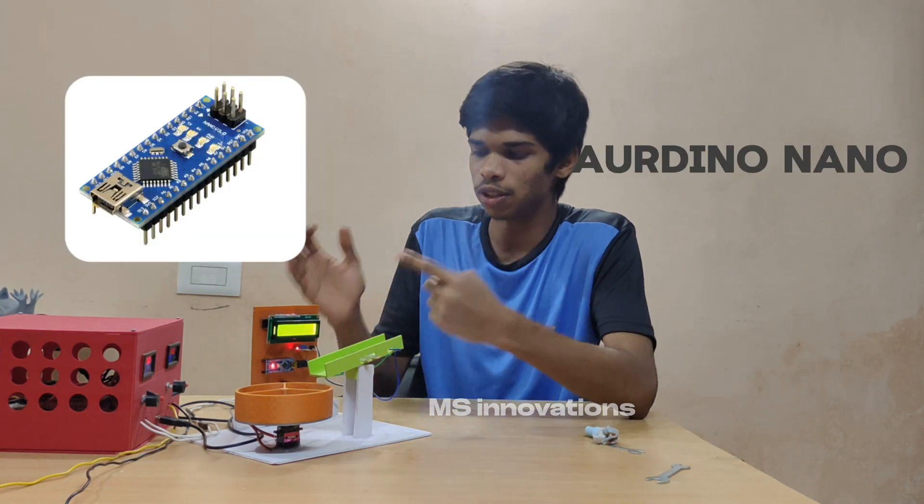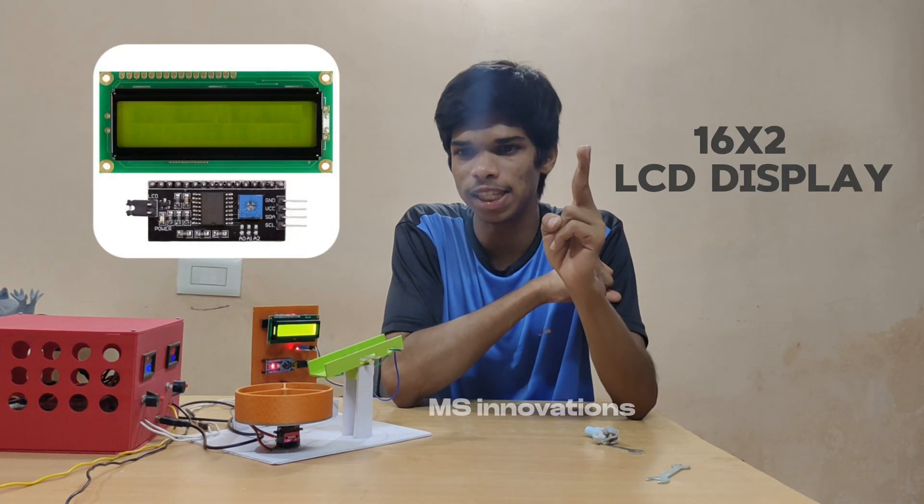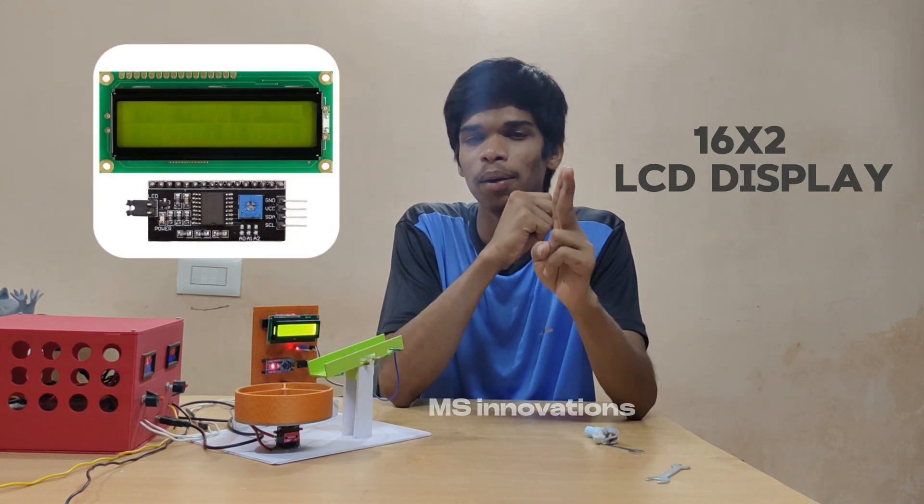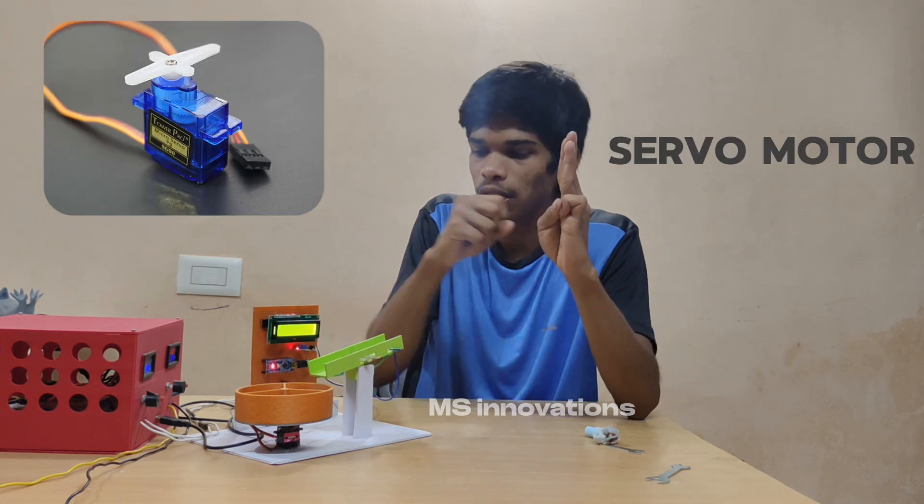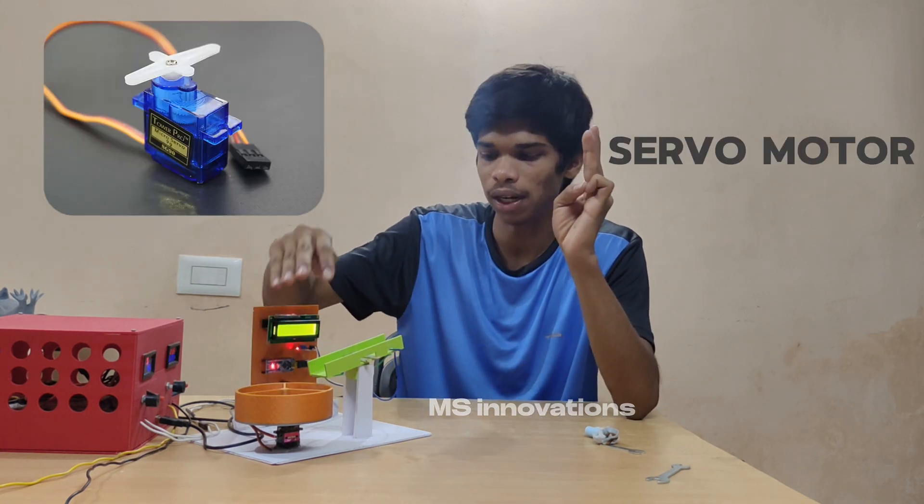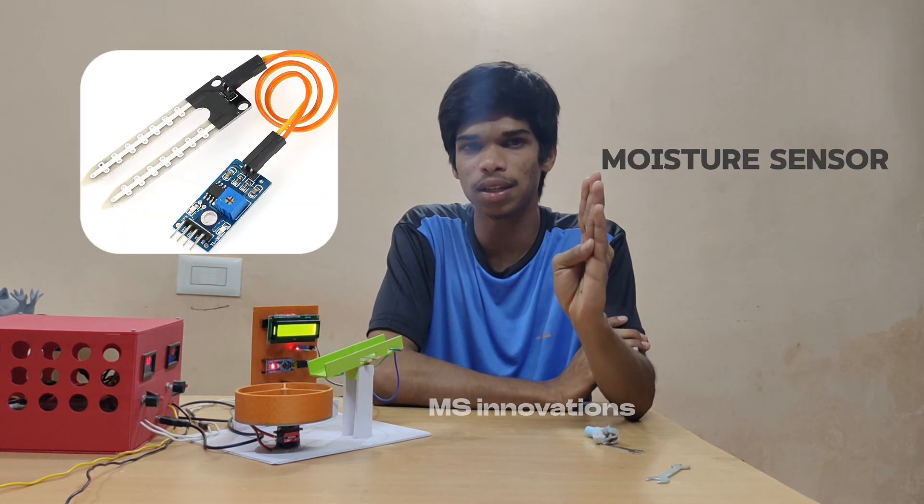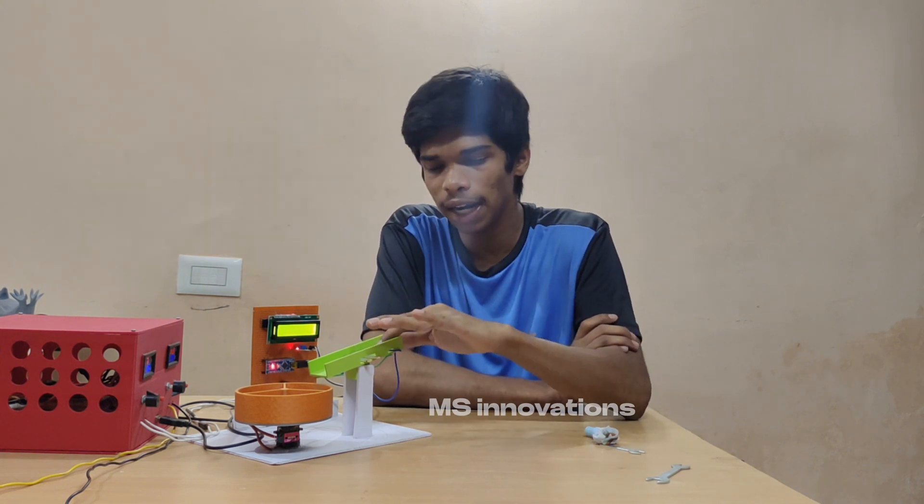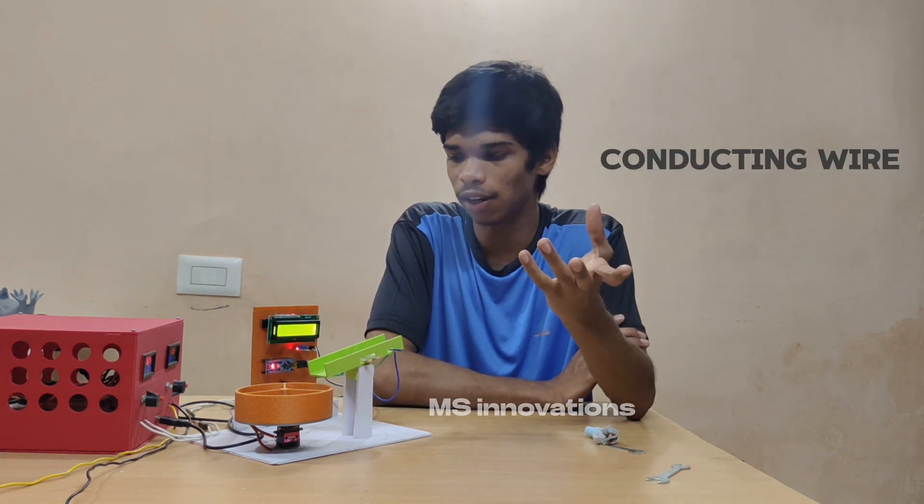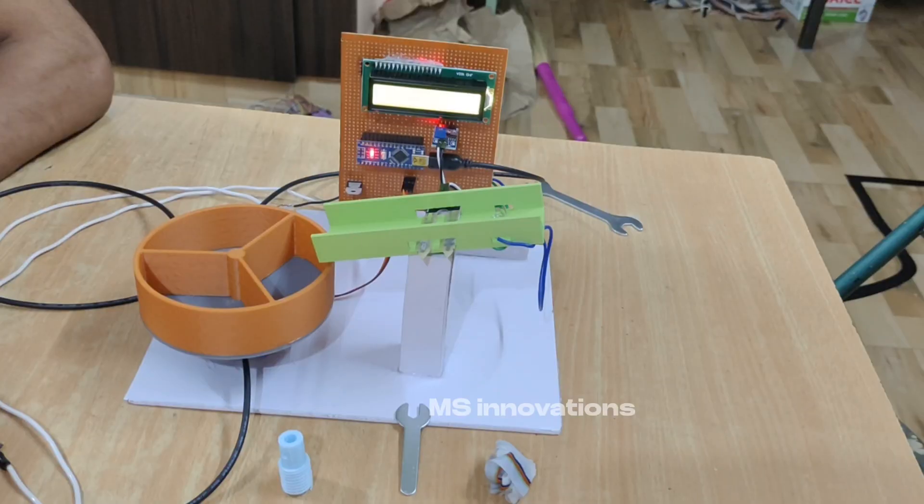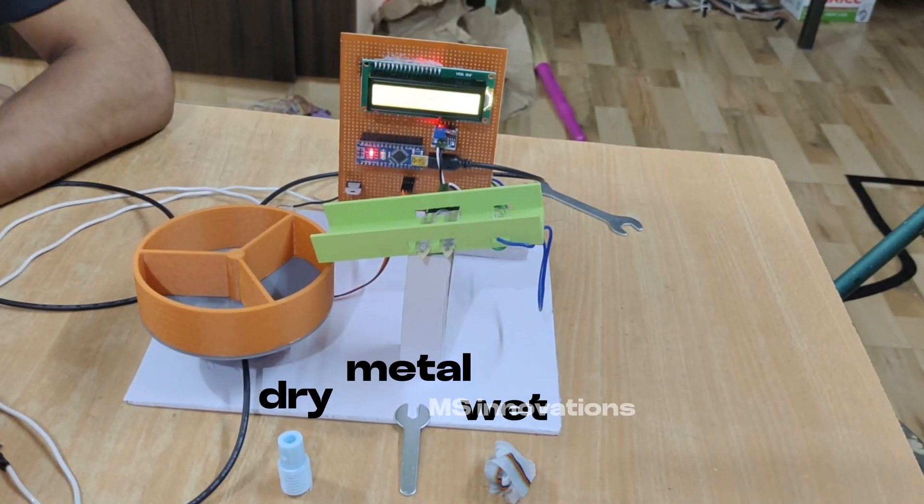To make this project, what components are required? Mainly Arduino Nano, which is the brain of this project, and a 16x2 LCD display which is compatible with I2C communication, and a servo motor to access the different parts of the dustbin. A moisture sensor will detect dry waste and wet waste, and a conducting wire to detect the metal waste. You can use foam or 3D printed parts to make this body. Without this body, the system won't work.